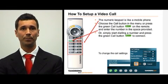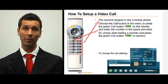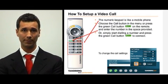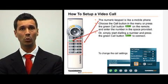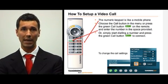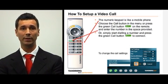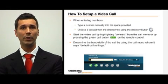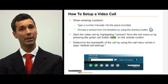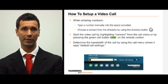How to set up a video call. The numeric keypad on the remote control works in a similar way as one on a mobile phone. Choose the call button in the menu or press the green call button on the remote control and enter the number in the space provided. Or simply start dialing the number and press the green call button to connect. When entering numbers you can do it by either typing a number manually in the space provided or by selecting a contact from the directory.